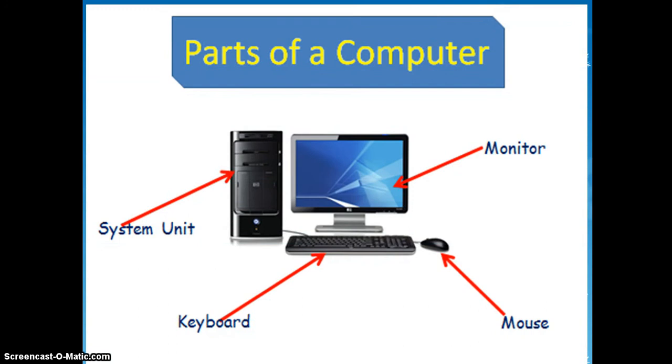Now, what are the parts of a computer? A computer usually has a monitor. That's the part that looks like a TV screen. The computer has a mouse, and the computer has a keyboard. The computer also has a system unit. That's the part that looks like it's standing upright.